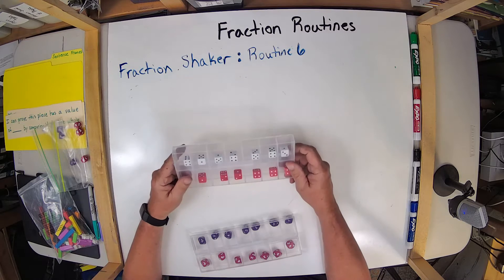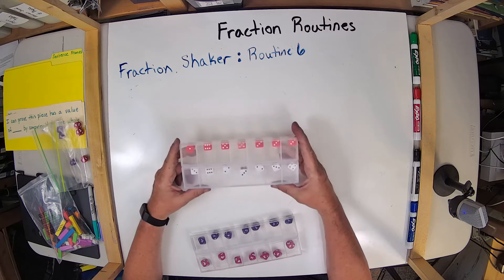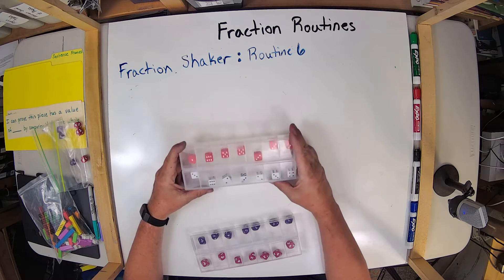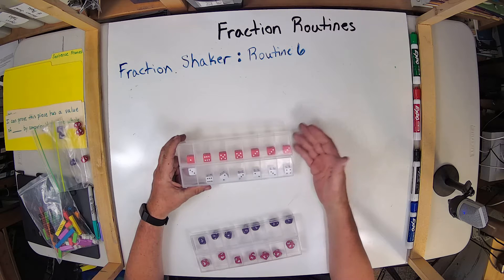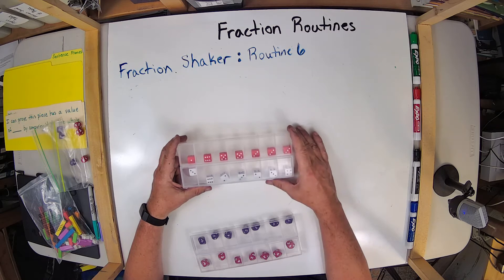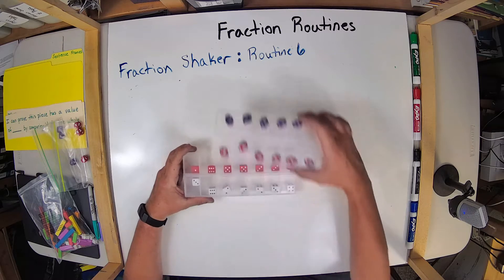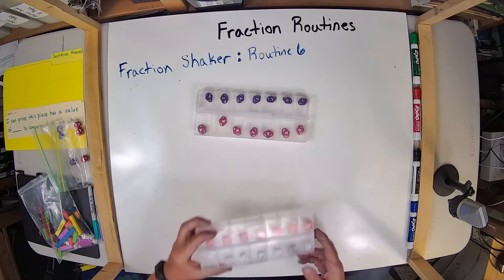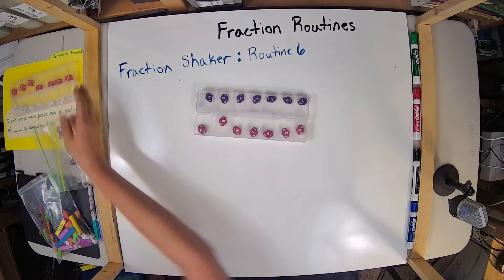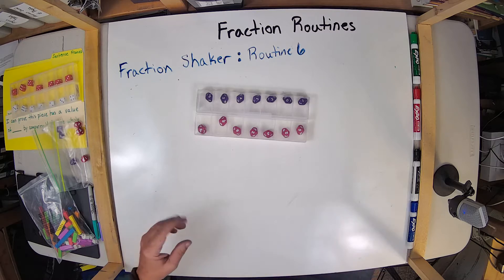So up until now, we've been using the six-sided dice, which is good, except it does limit us because it leaves out a zero and also leaves out the seven, eight, and nine. So I have ten-sided die now that I'm going to use instead of the six-sided die. That just gives us a fuller range of fractions.